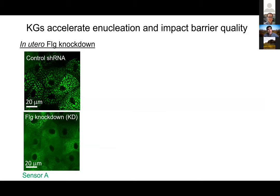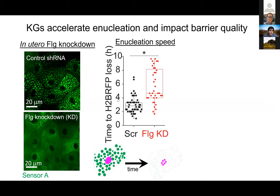What's the consequence of that? The first thing we noticed was that looking at H2B-RFP — the nuclear signal — in the control case, within two to four hours there is complete loss of that signal. But whenever we depleted phase separation by depleting filaggrin, we see a lengthening of that process — the removal of the nucleus is no longer very effective or efficient. This was the first sign that phase separation was playing an important role in controlling the process of enucleation.